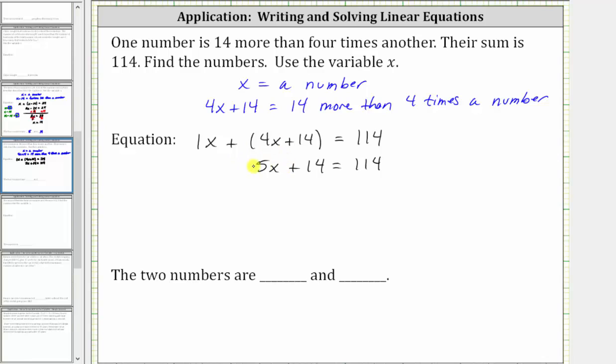The next step is to isolate the variable term by adding or subtracting. To undo plus 14, we subtract 14 on both sides. Simplifying, 14 minus 14 is zero. The left side simplifies to five x. We have five x equals 114 minus 14 is 100.